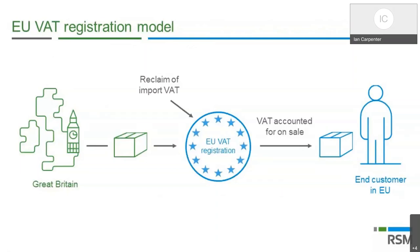One approach for UK businesses is the EU VAT registration model. The UK business imports goods into the EU, registers for VAT, accounts for VAT on the sale, and recovers the import VAT. Customs duty, if applicable, will be a cost. From the customer's perspective, they are charged local VAT in the same way they would be when buying from an EU business. However, this leads to requirements for multiple VAT registrations and additional compliance costs, as well as import costs — so cost is a common theme.